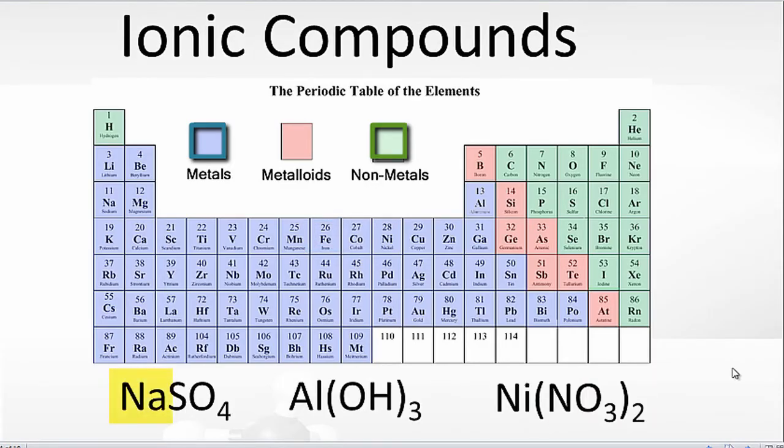Often, you'll see that you have a metal like Na, Al, or Ni bonded to a number of non-metals. In that case, that is going to be an ionic compound as well.